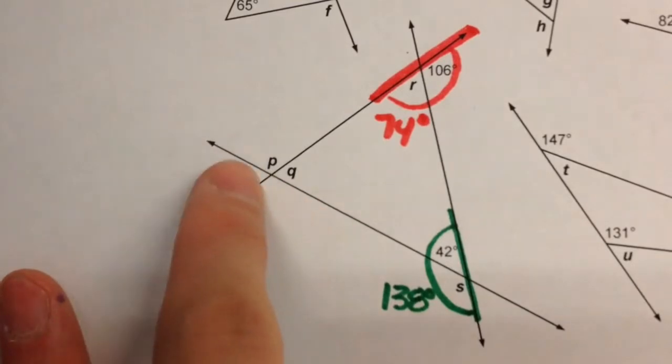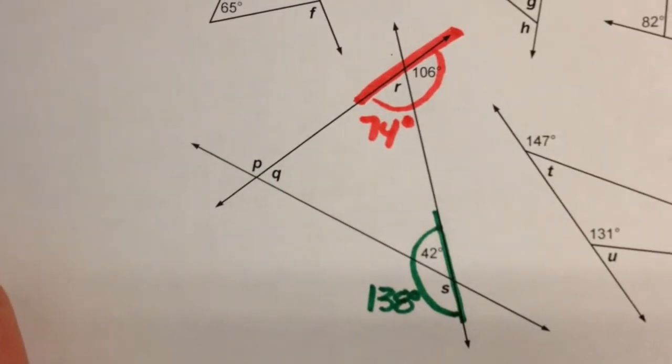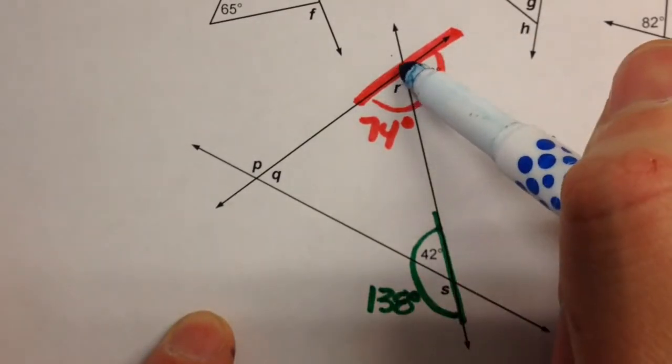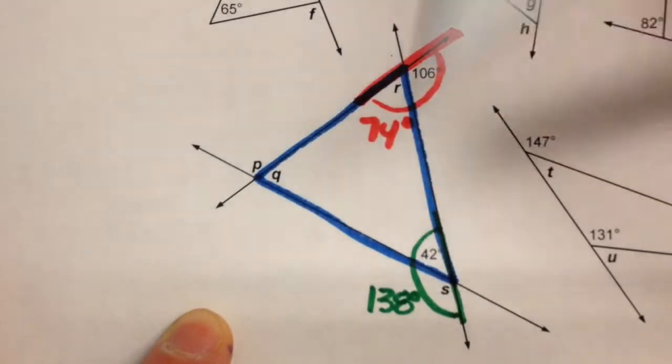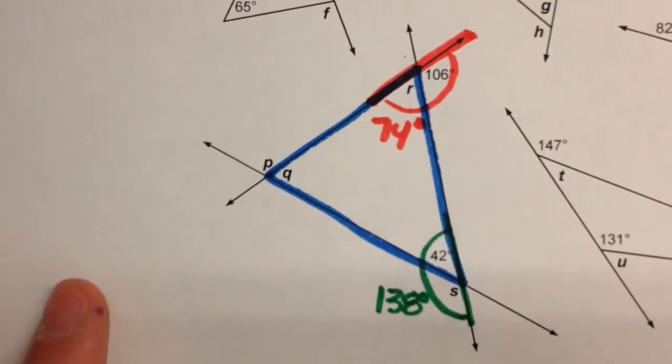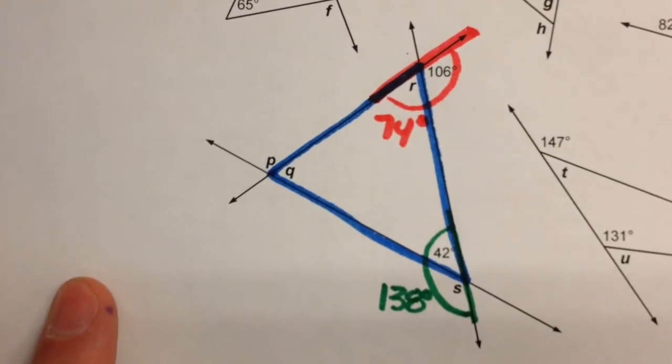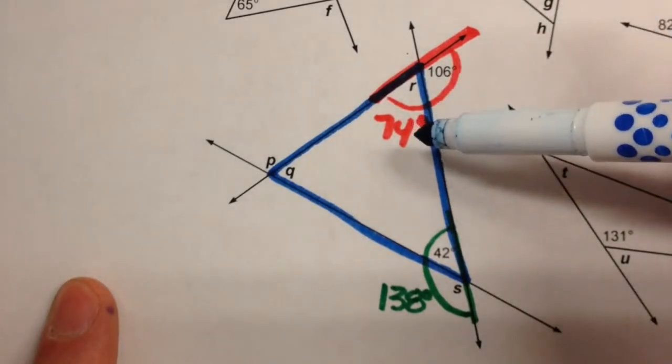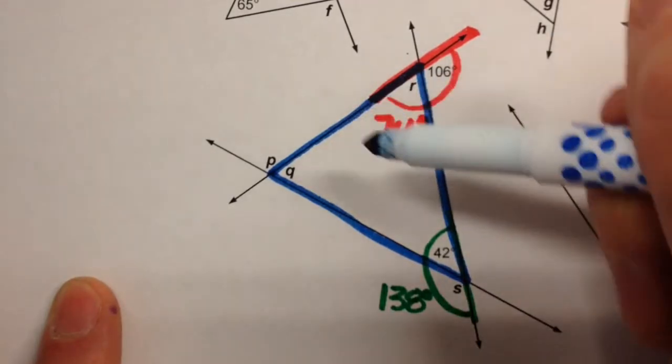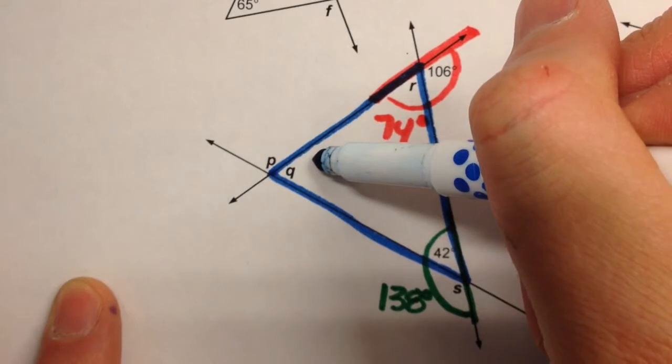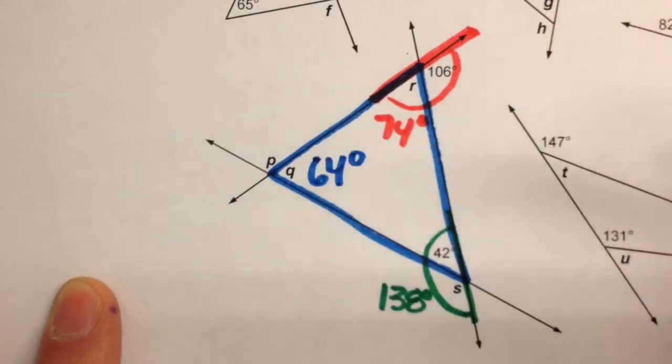Now to figure out P and Q, we have to use what we learned today, which is that if you have a triangle, three angles inside of a triangle have to add up to 180 degrees. So if this is 74 and this is 42, that's 116 degrees, so this angle here has to be 64 degrees.